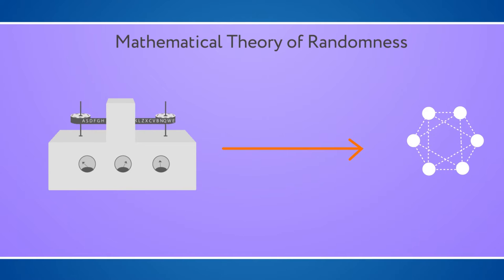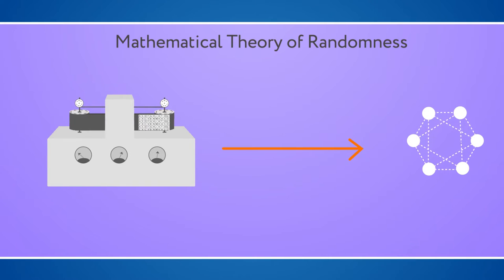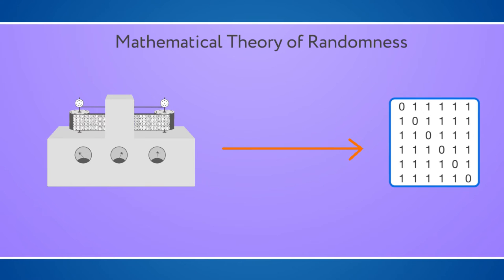A computer program is usually conceived to work on a one-dimensional tape. By replacing this one-dimensional tape with a two-dimensional one, we can define the complexity of a graph as the probability of a random computer program to produce the adjacency matrix of that graph.